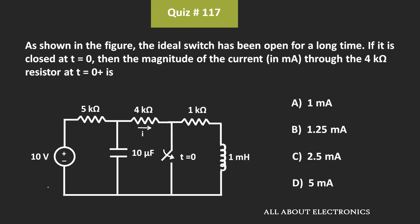Hey friends, welcome to the YouTube channel All About Electronics. In this question, we have been given this circuit. Here, we have been given that this switch is in the open condition since a long time, and at time t is equal to zero, this switch is closed. In that condition, we have been asked to find the current through this 4kΩ resistor.